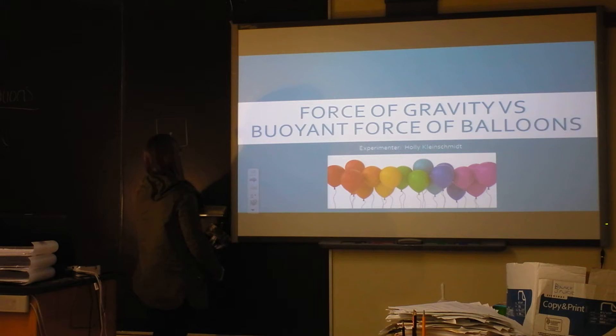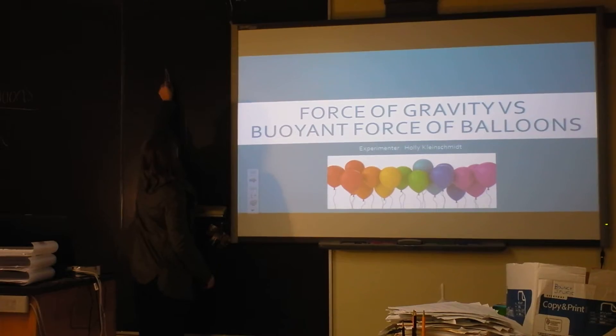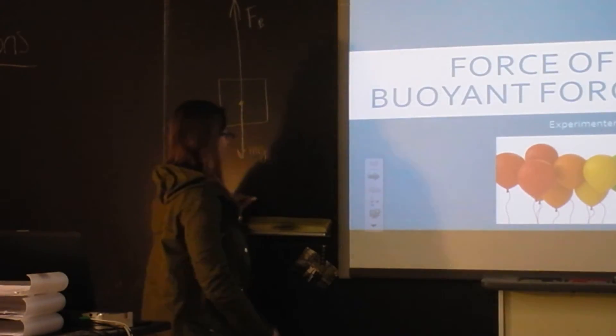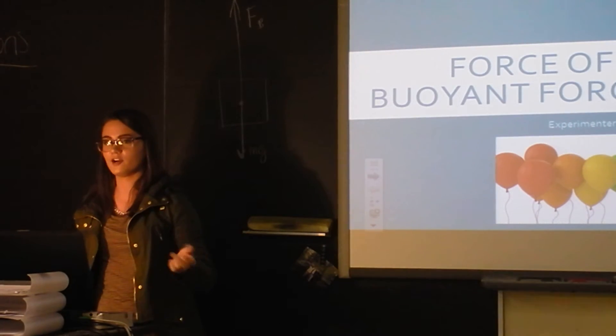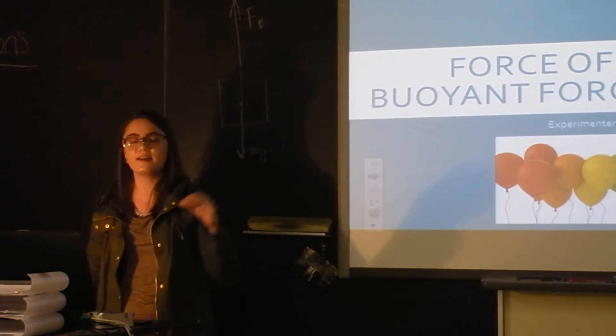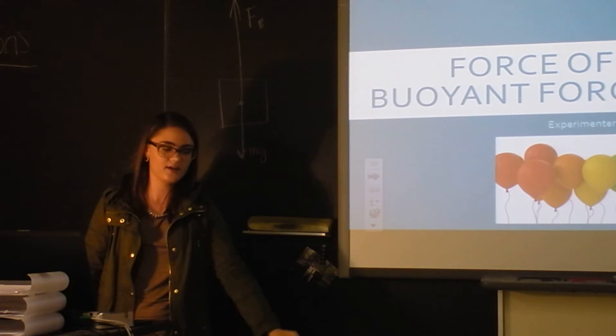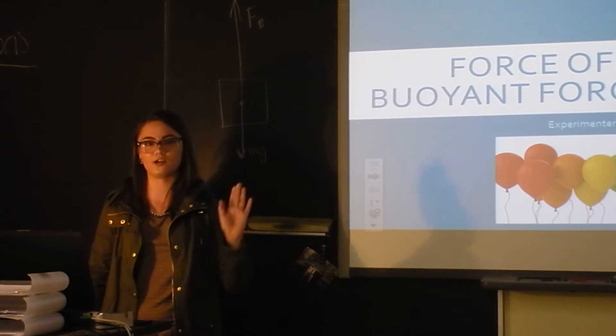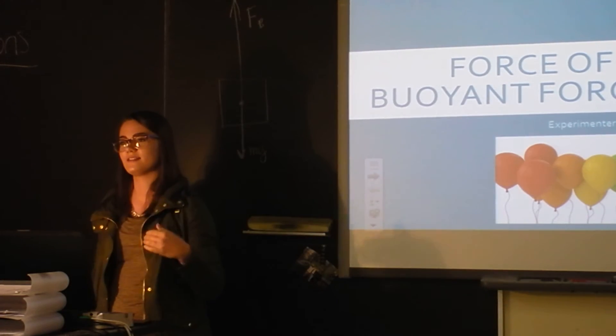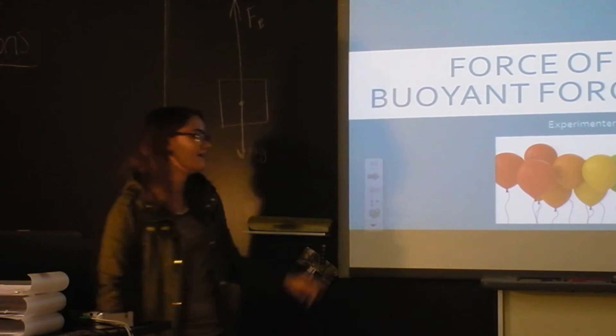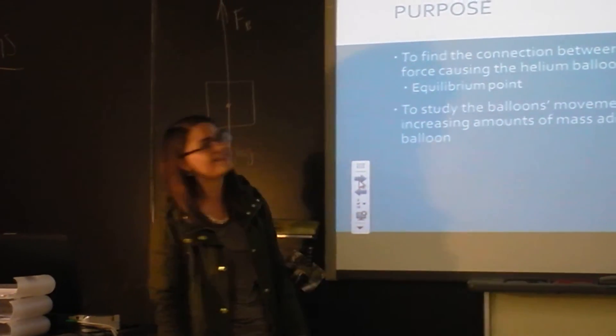Obviously downwards is the force of gravity, which is mg. And then upwards, you have a much bigger buoyant force. So it's kind of like the balloon is in a pool of air, and it's like a piece of ice. If you put it at the bottom of a tub of water, it's going to try to go upwards. So the balloon was attempting to get to the top of air.